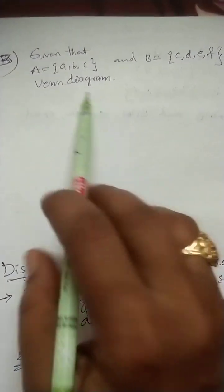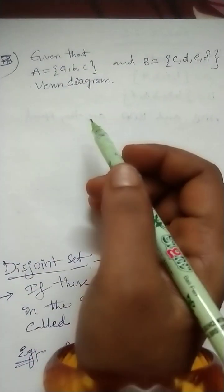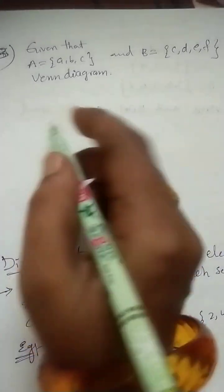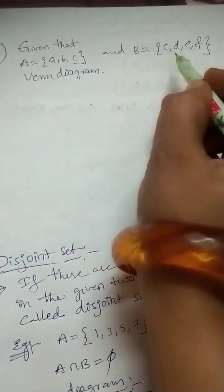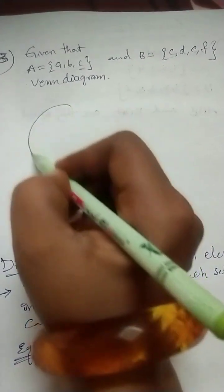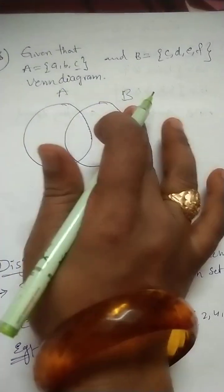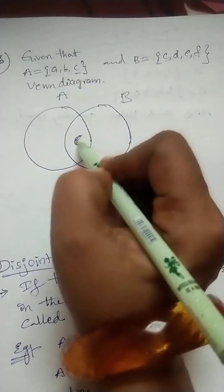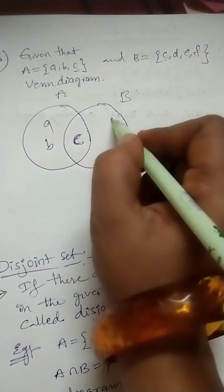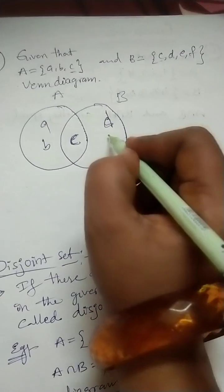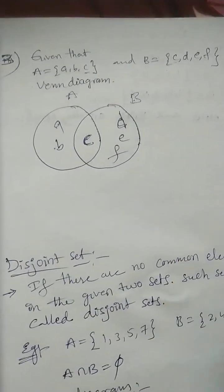Next question. See here, given that A set given, B set given. For these two sets, how to write the Venn diagrams? Here A has A, B, C. B has C, D, E, F. Means, only one is common here, C. First, take the set A, set B. This is the common region of A and B. C is already we wrote. D, E, F in the set B. In set A, A, B. For both the sets, common element is C. Like this, we can write the Venn diagram.